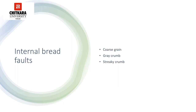The causes for grey crumb include: usage of excess fat, excess or insufficient salt, excess mineral improvers, less moisture content, slack or tight dough, under fermentation, over fermentation, and too high temperature.